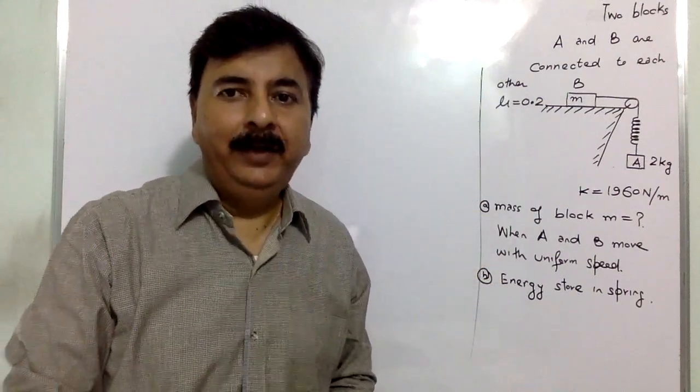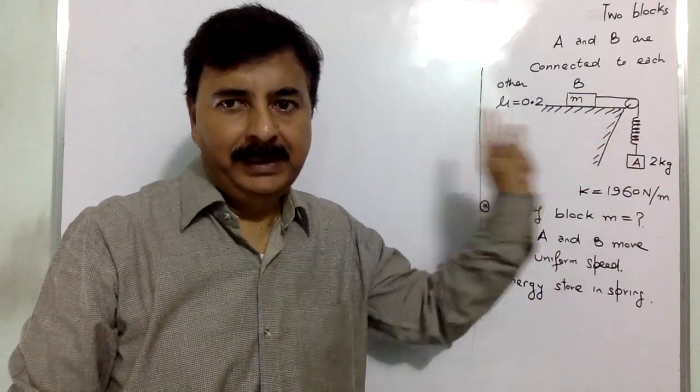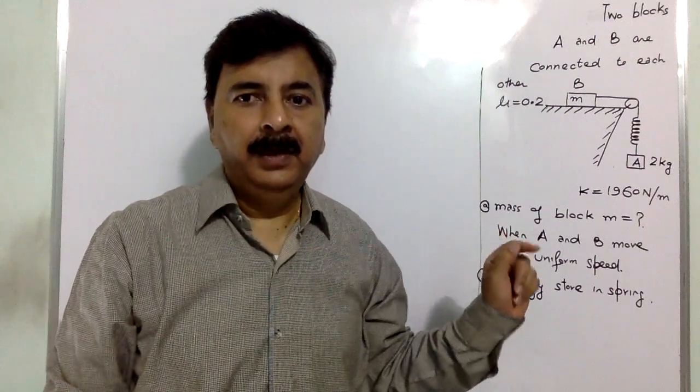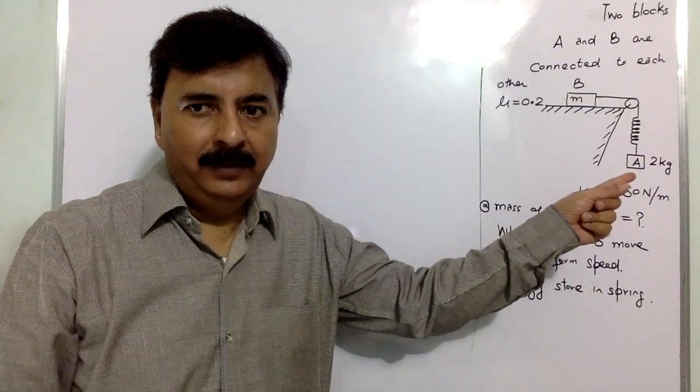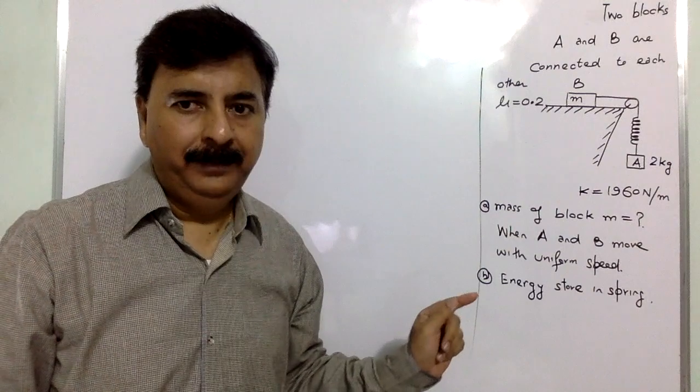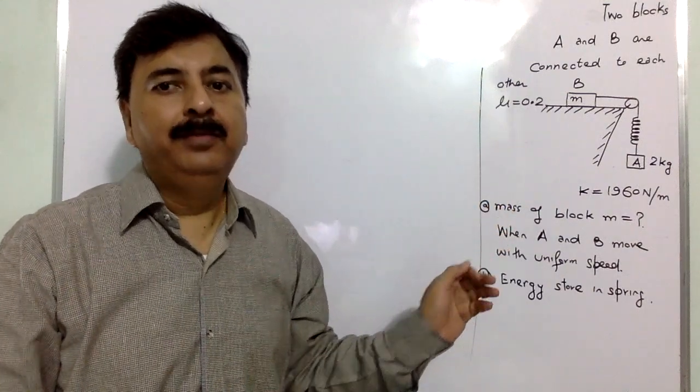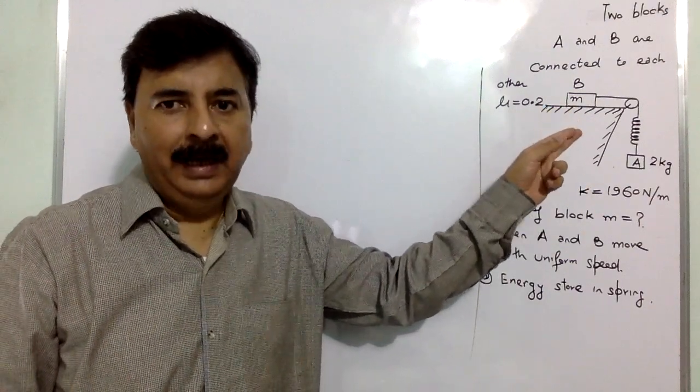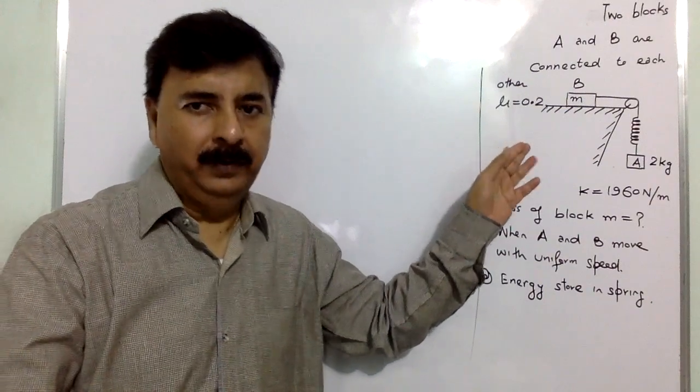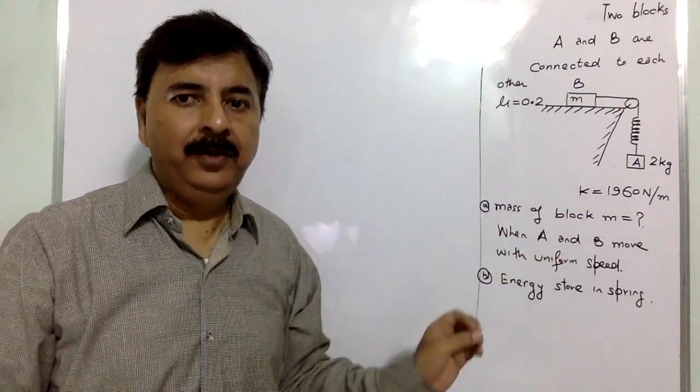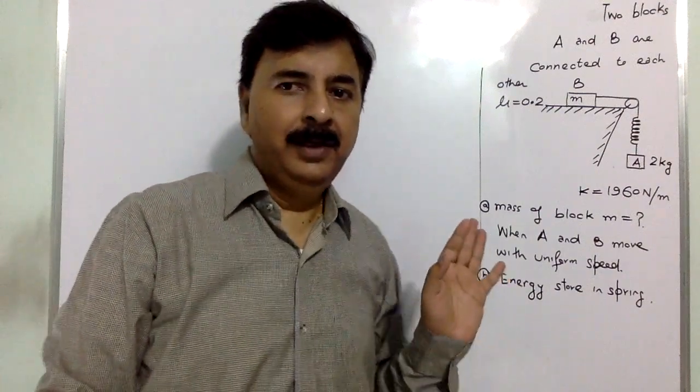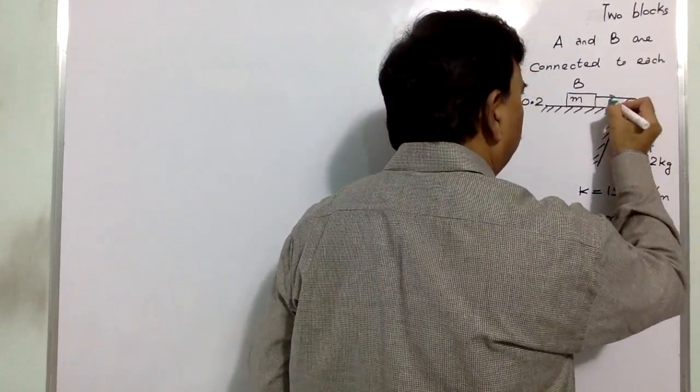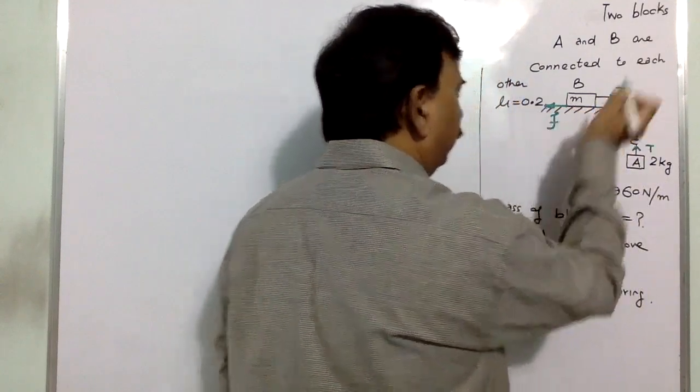Now in this question, 2 blocks A and B are connected to each other. This is A and B. Are they connected to each other. And block B is placed where there is friction. Coefficient of friction is 0.2. You have to find the mass of block B. Mass of block A is 2 kg and it is connected through a spring with the help of pulley. You have to find the mass of block B when A and B both move with uniform speed. The spring constant is also given. We have two blocks A and B. The mass of B is not known. The coefficient of friction is 0.2. Spring constant is 1960 Newton per meter.